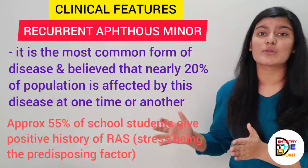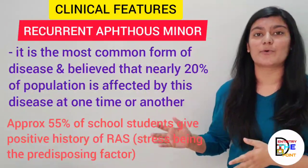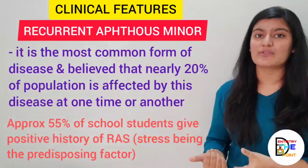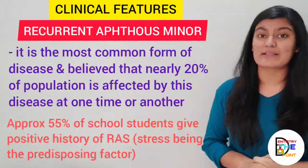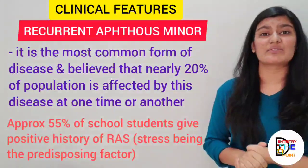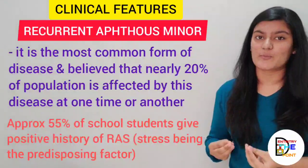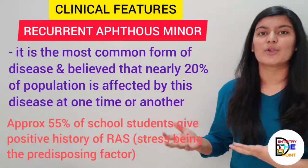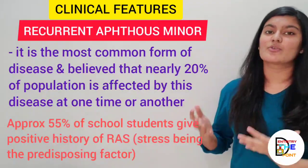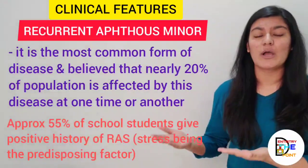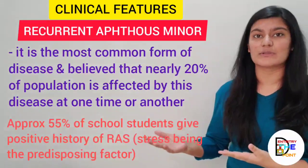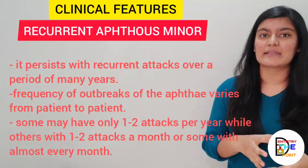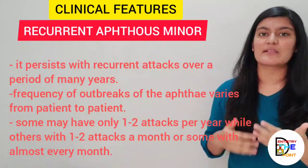It is interesting to note that around 55% of the population affected includes school students who are found positive for RAS minor. This is because stress — a very important predisposing factor under psychic factors — is commonly found in students during exam time, which may predispose them to RAS.